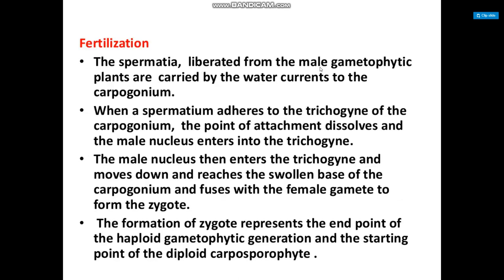In fertilization, the spermatia liberated from the male gametophytic plant are carried by water current to the carpogonium. When a spermatium adheres to the trichogyne of the carpogonium, the point of attachment dissolves and the male nucleus enters into the trichogyne, then moves down to the base of the carpogonium and fuses with the female gamete to form the zygote. The formation of the zygote marks the end of the haploid gametophytic generation and the start of the diploid carposporophyte.